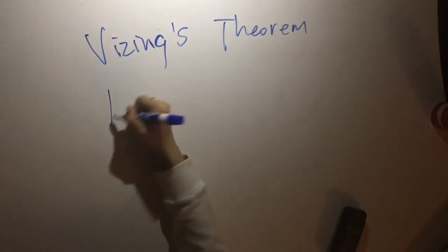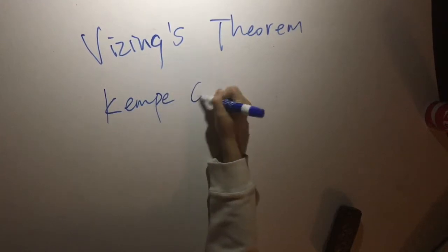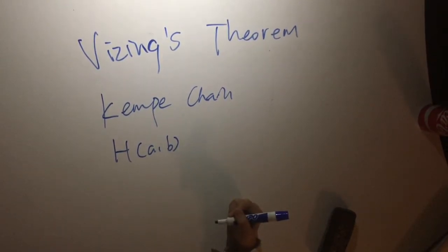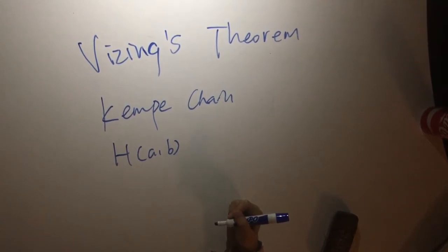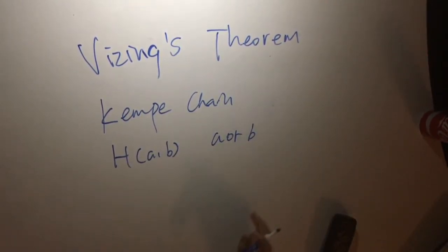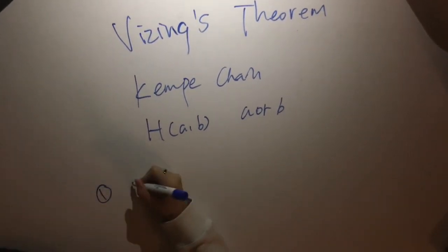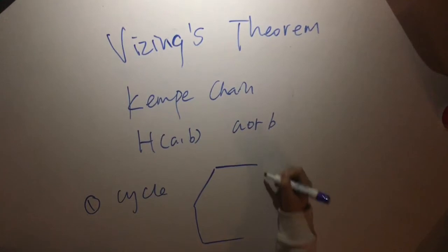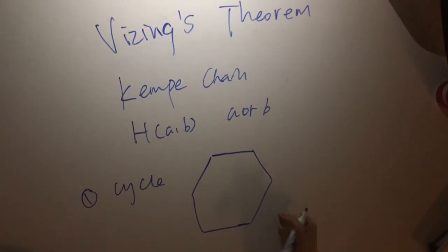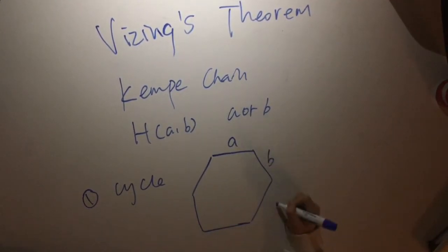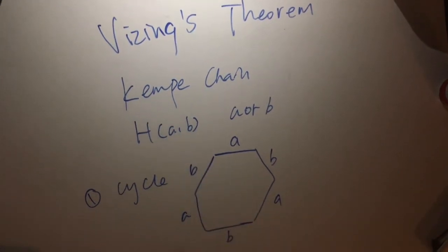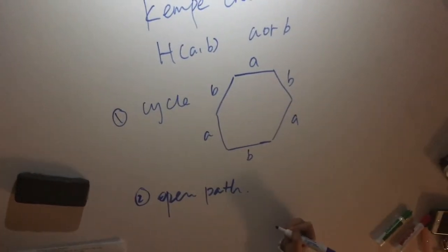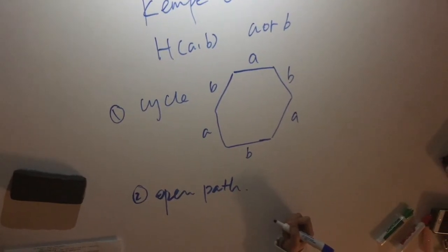The second terminology is Kempe chain. A Kempe chain with colors A and B is a connected subgraph with all edges colored by A or B alternatively. There are two forms: the first is a cycle with an even number of vertices, where we can label the edges with A and B alternatively. The second form is an open path ending at two vertices where one of A or B is missing.